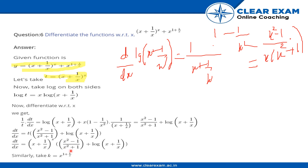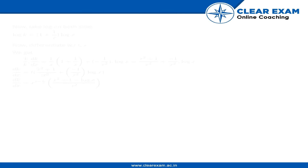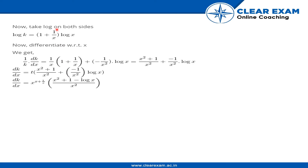Now take the second term: let k = x^(1 + 1/x). Applying natural logarithm on both sides gives log k = (1 + 1/x)·log x. Differentiate with respect to x.